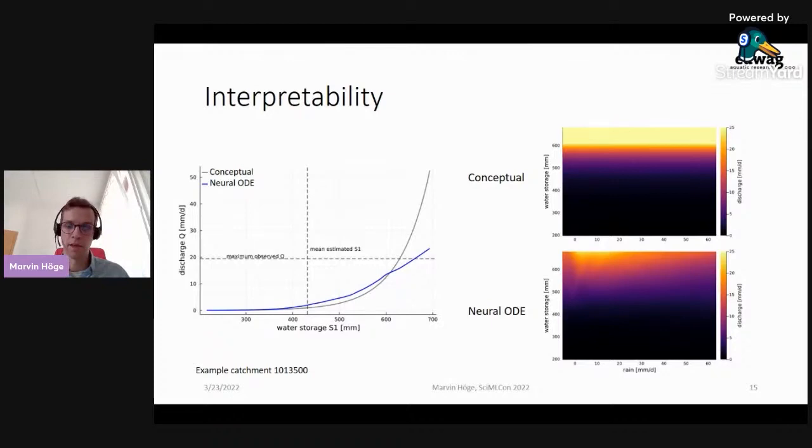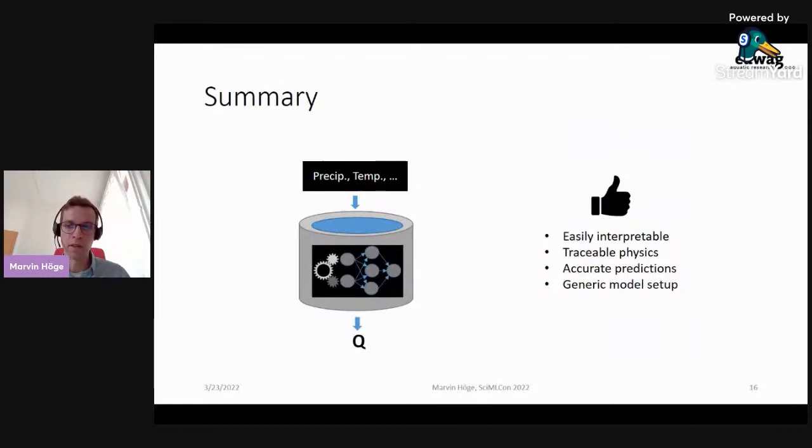So in summary, we can say that this neural ODE model provides many of the desired features of a hydrologic model. It keeps the ease of interpretability and traceable physics, and it provides state-of-the-art predictive performance, and that even as continuous-time solution, which as said, is not given for other machine learning approaches in hydrology. And finally, the generic model setup is highly transferable between catchments.